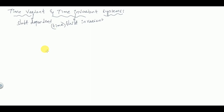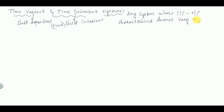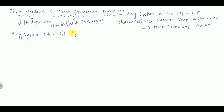Which type of systems are said to be time variant or time invariant? Any system whose input-output characteristics do not vary with time is called a time invariant system. Any system whose input-output characteristics vary with time is called a time variant system.